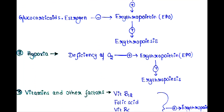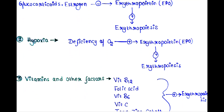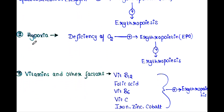Next is hypoxia — the condition when a deficiency of oxygen occurs. In that case, the hormone erythropoietin is stimulated, and obviously these hormones stimulate the process of erythropoiesis.